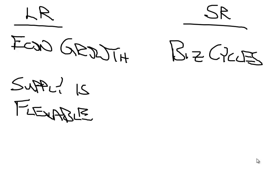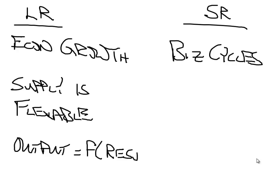In this case, output is a function of our resources. Basically we take our resources, put them inside of our technology, and we get our output.